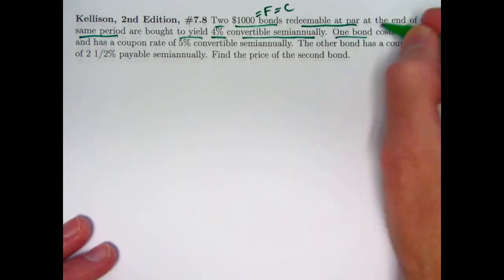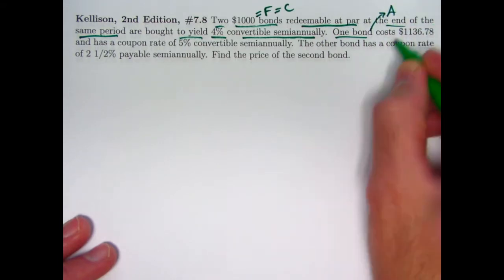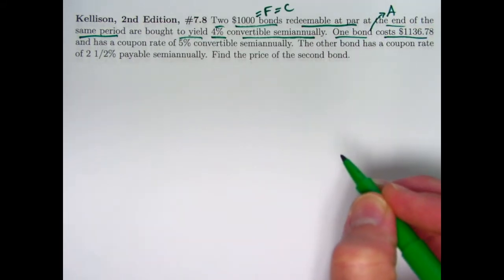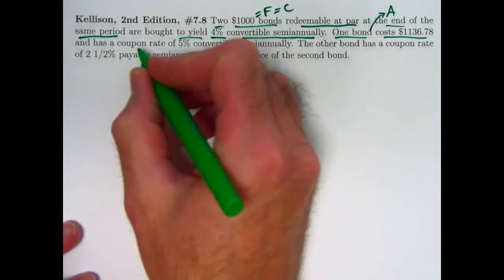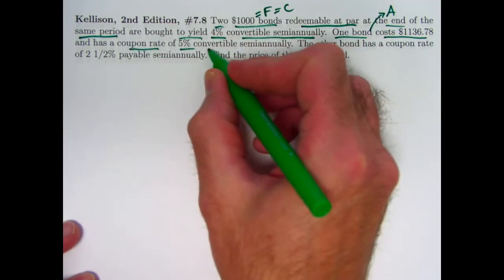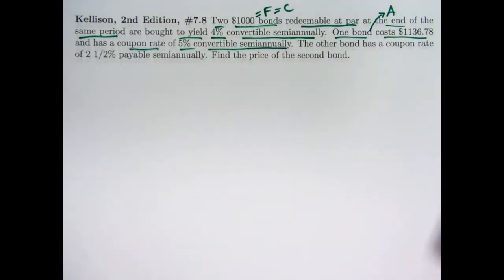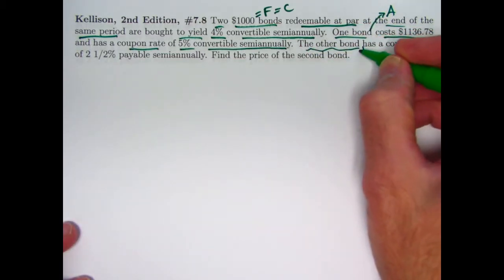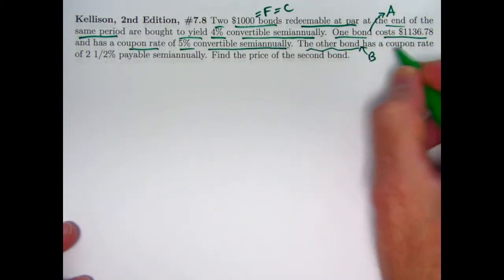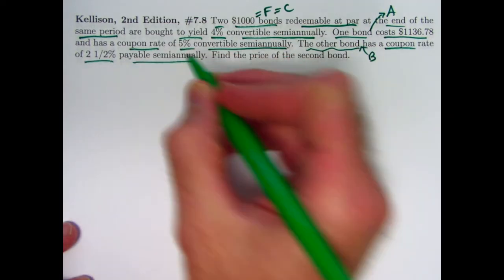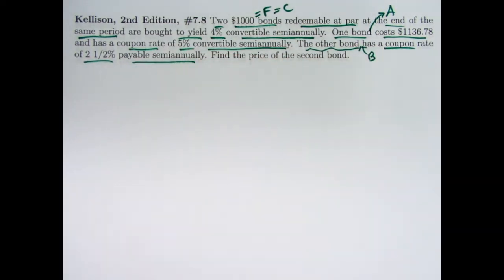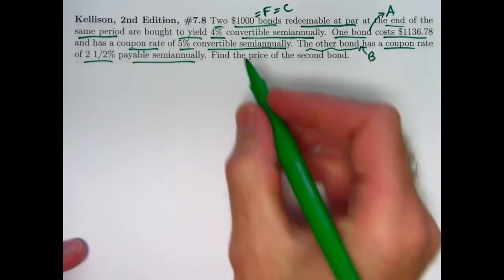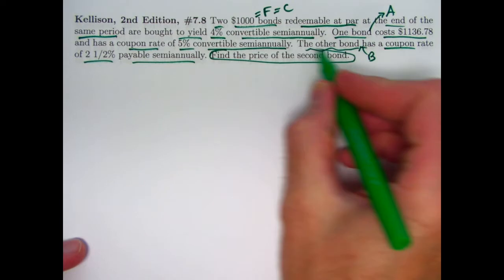The first bond, call it bond A, costs $1,136.78 and has a coupon rate of 5% convertible semi-annually, so 2.5% per half year. The other bond, which is the one we're interested in, call it bond B, has a coupon rate that's half of the coupon rate for bond A. The goal is to find the price of the second bond.